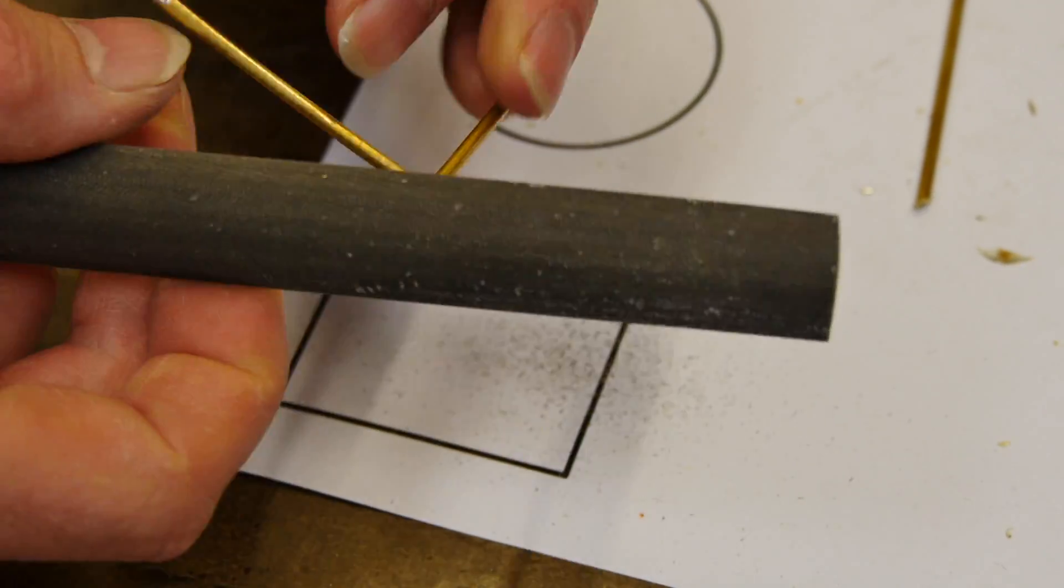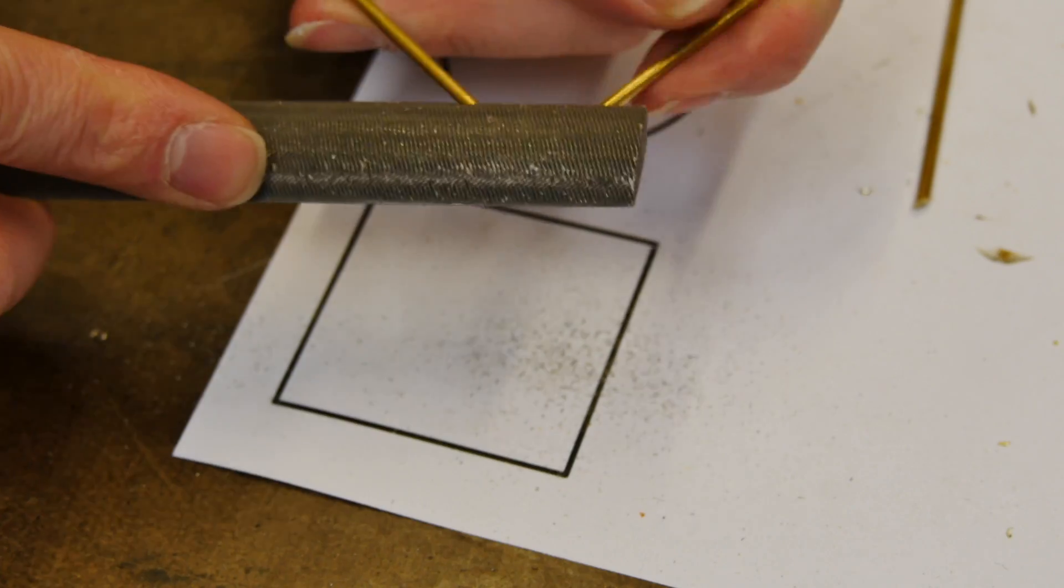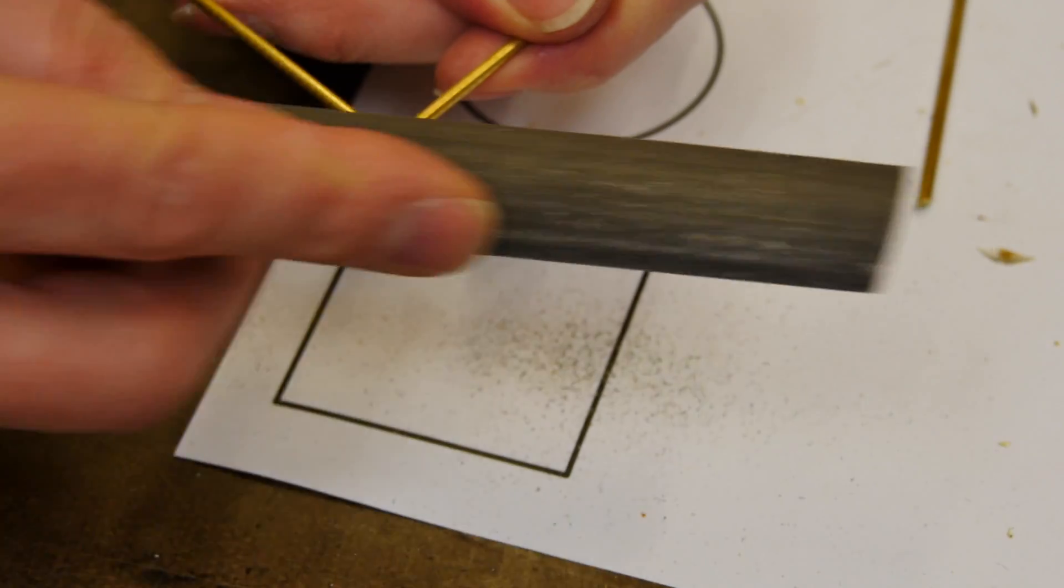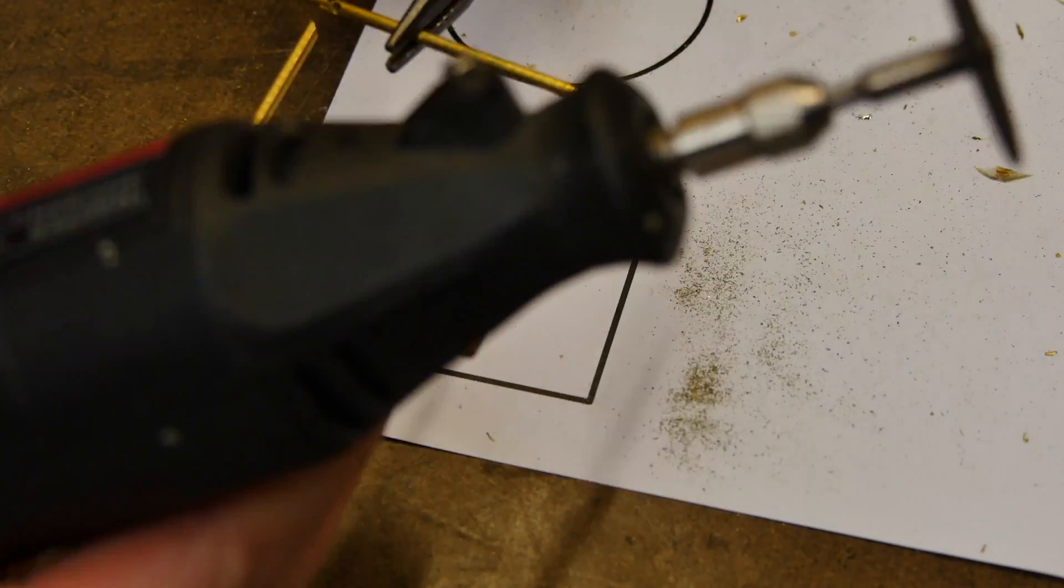Remember the brass sucks up the heat from the soldering iron so you need to heat it up a little bit longer and let that solder flow so that you can get a good connection. I'm using a file here just to sort of clean up a little bit of the solder blobs.